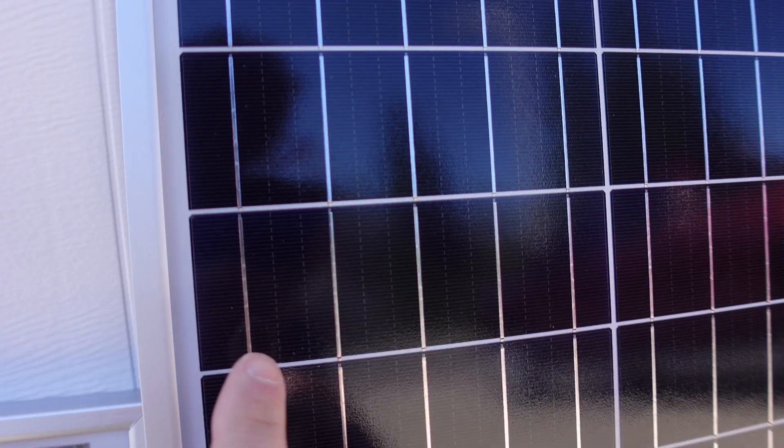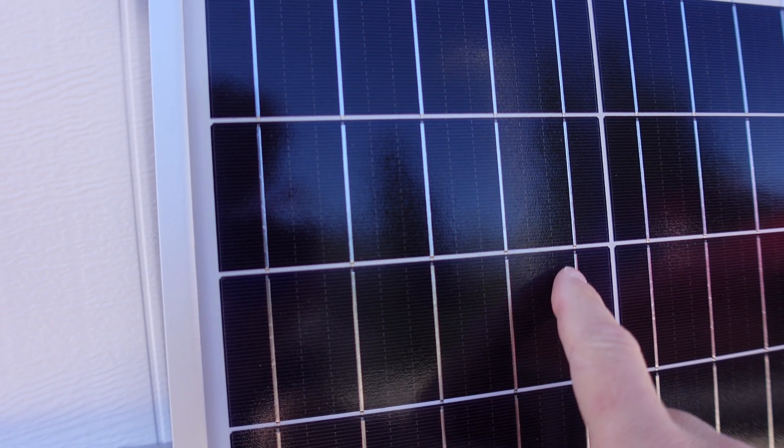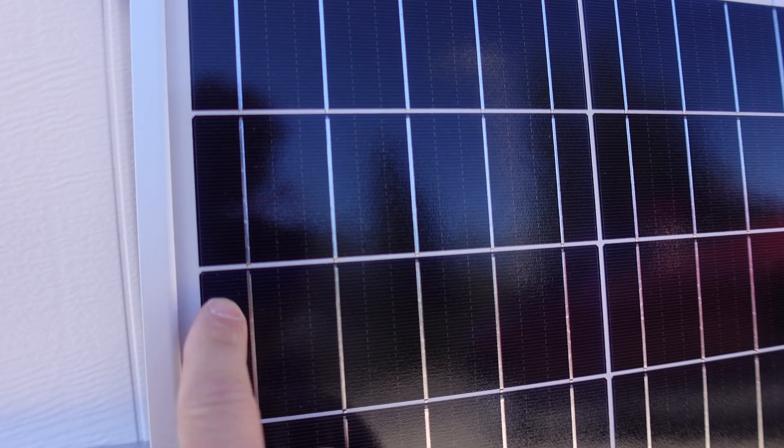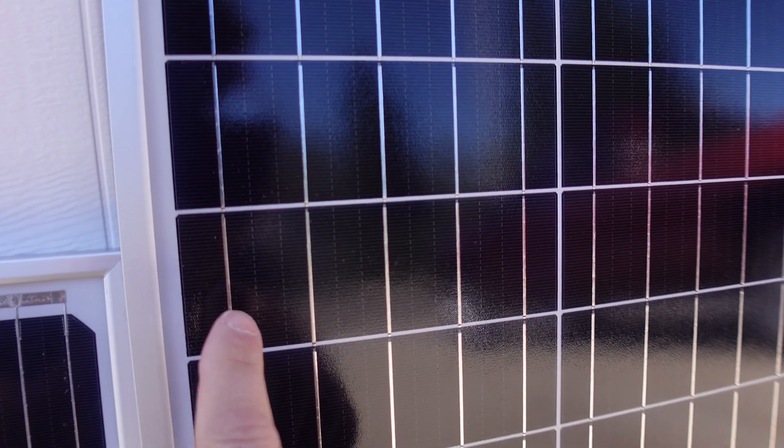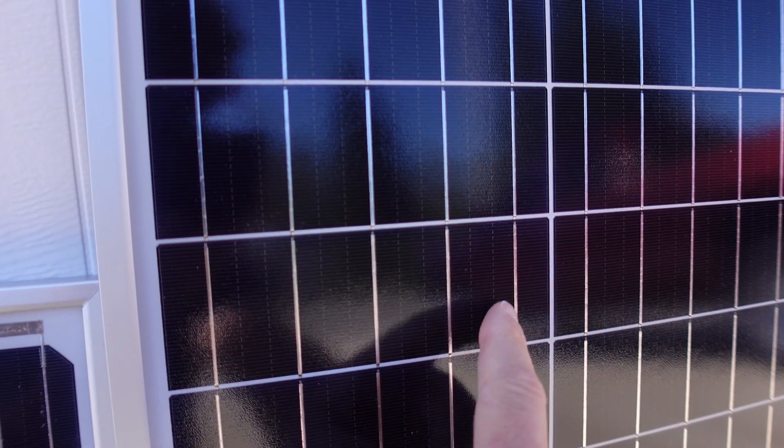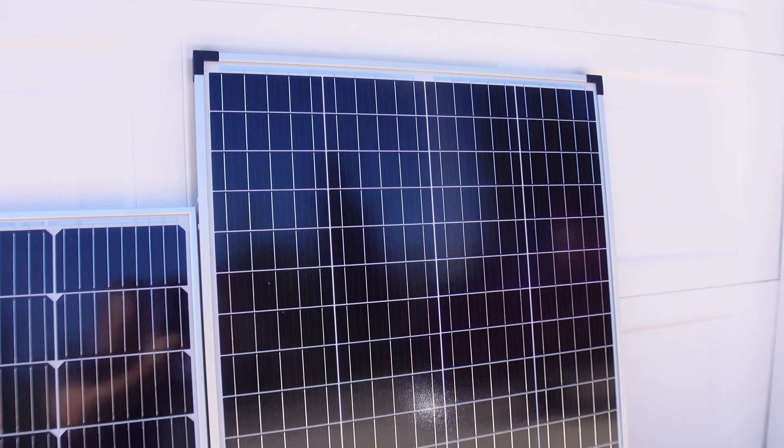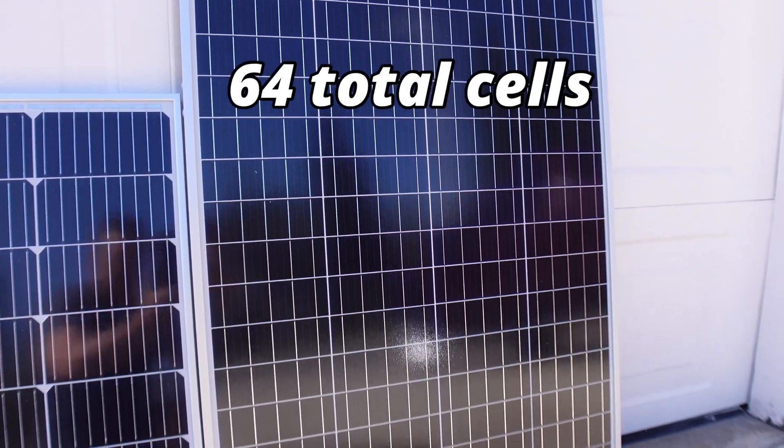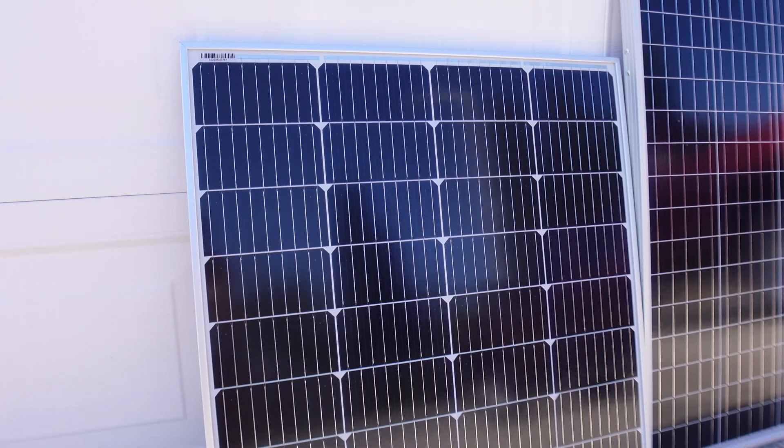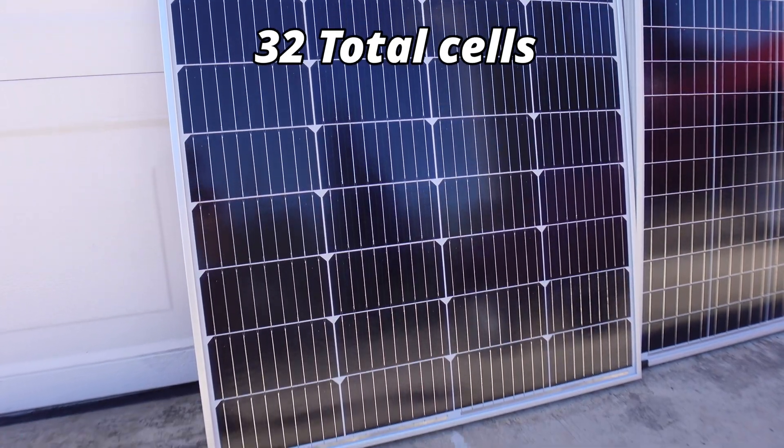The Harbor Freight panel has been unchanged in the last couple years, still utilizing a quarter cut cell and only five bus bars per cell. The Harbor Freight solar panel consists of 64 total cells, while the new power only has a total of 32 total cells, so we'll see which one does better.